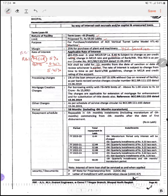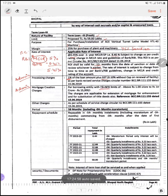RBI के guidelines के हिसाब से वो change होता जाएगा। Processing charges — 1% of the loan amount plus GST। इसकी भी एक ceiling होगी कि आप total loan amount का कितना percent तक charge कर सकते हो। Interest, processing charges, mortgage — सब उस ceiling के अंदर आ जाएगा। Mortgage creation charges — यह भी charges होते हैं जब mortgage करोगे तो mortgage का document भी बनेगा। Borrowing entity with fund based plus non-fund based limits of above 1 crore to 10 crore is Rs. 15,000।